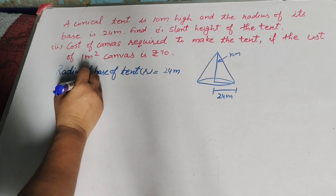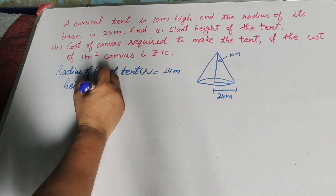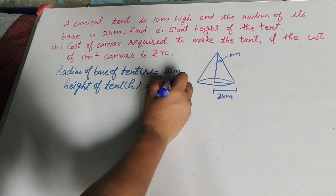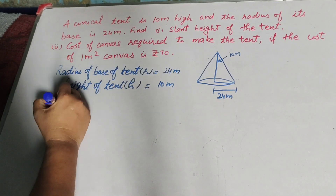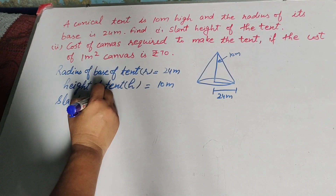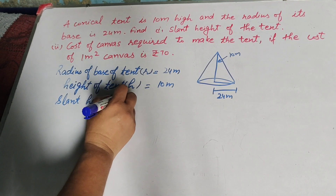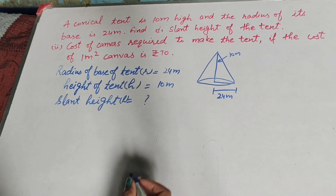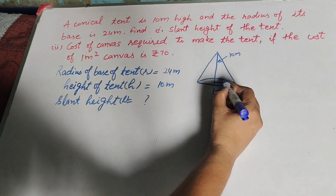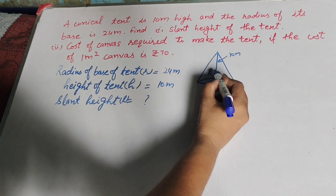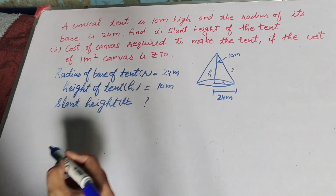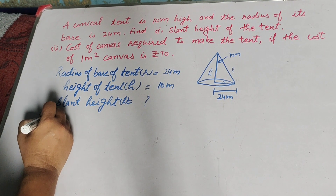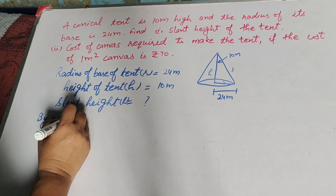The radius of the base of the tent is r equal to 24 meters, and the height of the tent is h equal to 10 meters. We find the slant height, which is l. Here, r is the radius, h is the height, and this side is the slant height l. We find the slant height by using Pythagoras' theorem.